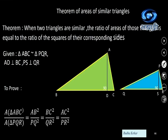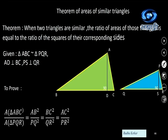Now let us move on to an important theorem: the theorem of areas of similar triangles. When two triangles are similar, the ratio of their areas equals the ratio of the squares of their corresponding sides. So A1 upon A2 equals AB square upon PQ square, where AB and PQ are corresponding sides. This can be similarly proved for other combinations of sides.